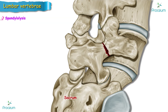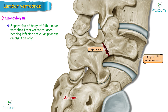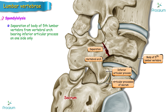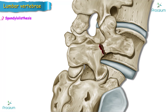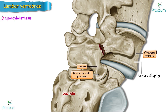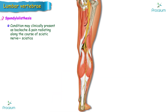Spondylolysis is a condition in which there is separation of the body of the fifth lumbar vertebra from the vertebral arch bearing the inferior articular process, on one side only, which normally interlocks with the articular processes of the sacrum. Spondylolisthesis is the forward slipping of the fifth lumbar vertebra over the sacrum; sometimes the inferior articular processes, laminae, and spine of L5 are separated from the rest of the vertebra, which slips forwards on the sloping superior surface of the sacrum. This condition may clinically present as backache and pain radiating along the course of the sciatic nerve, causing sciatica.